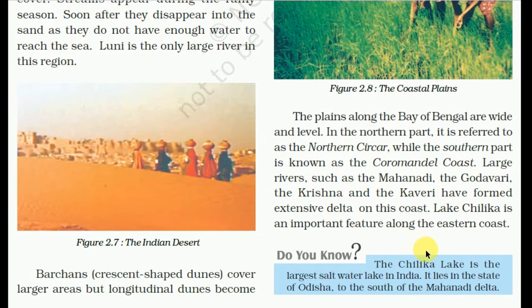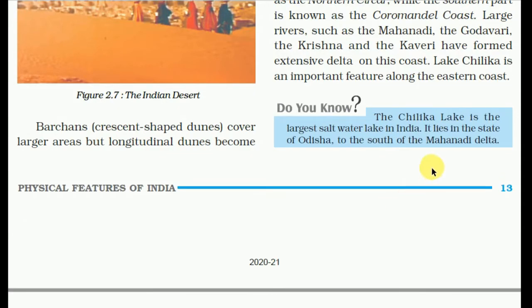Lake Chilka is an important feature along the eastern coast. Chilka Lake is the largest salt water lake in India. It lies in the state of Odisha to the south of the Mahanadi river.